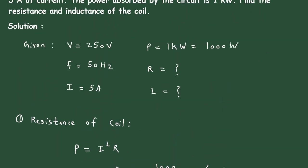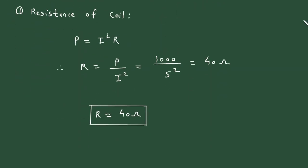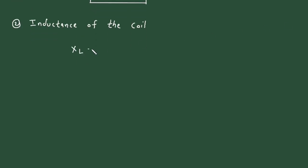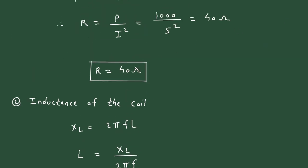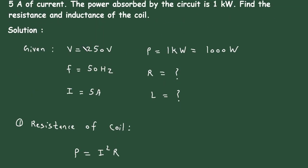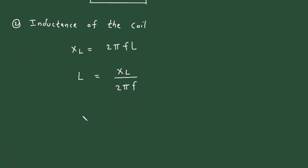Next we have to find the value of inductance of the coil. To find inductance, we know that inductive reactance XL is equal to 2πFL. So from this, L is equal to XL upon 2πF. But we don't have the value of XL. We have the value of resistance, voltage, frequency, current, and power, so we need to find XL first using Z is equal to the square root of R squared plus XL squared.